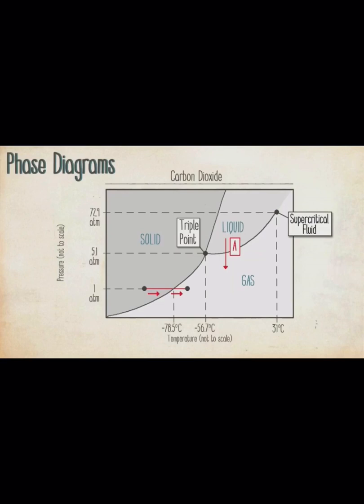The phase diagram for carbon dioxide is shown here. The red line labeled A represents a change in pressure from 35 atmospheres to 2 atmospheres. What happens to the state of the carbon dioxide during this pressure change at constant temperature? Is it A, the state changes from solid to liquid, B, the state changes from solid to gas, C, the state changes from gas to liquid, or D, the state changes from liquid to gas?